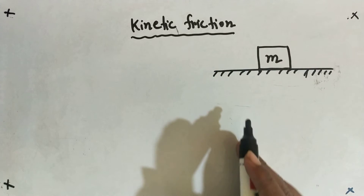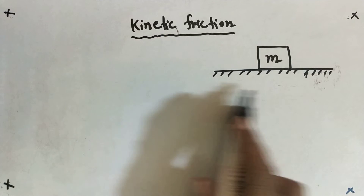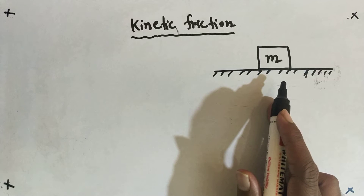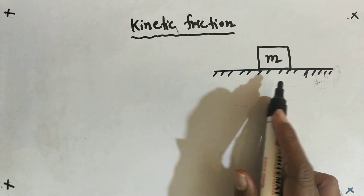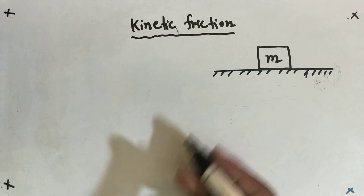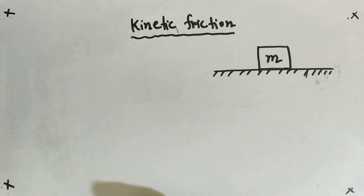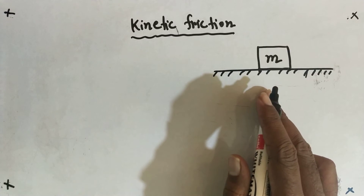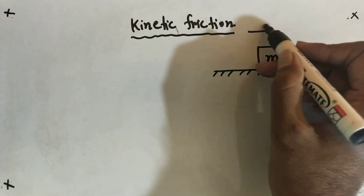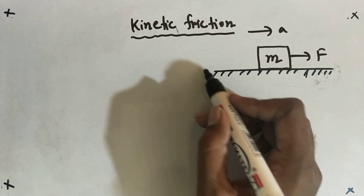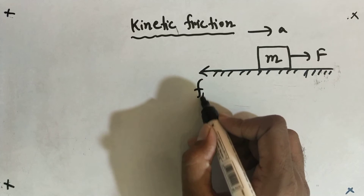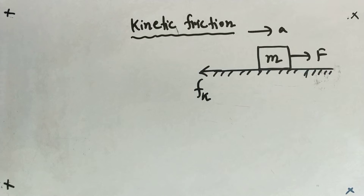Now let me discuss kinetic friction. Kinetic friction will only arise when the body is in motion. If the body is at rest, up to a limiting value, there is a static frictional force, and the limiting frictional force is the maximum value of static frictional force. Kinetic friction arises only when the object is moving. So if the object is moving with an acceleration A and a force F is applied, then along the backward direction a frictional force will arise — this is called the kinetic frictional force, denoted by Fk.